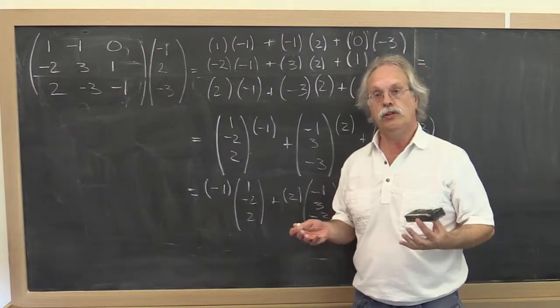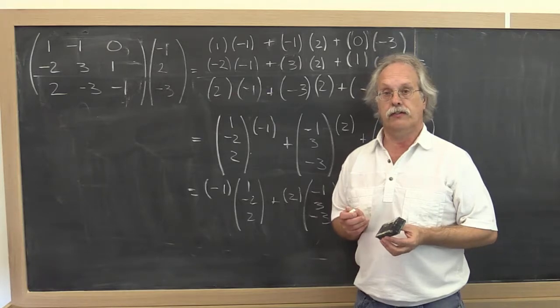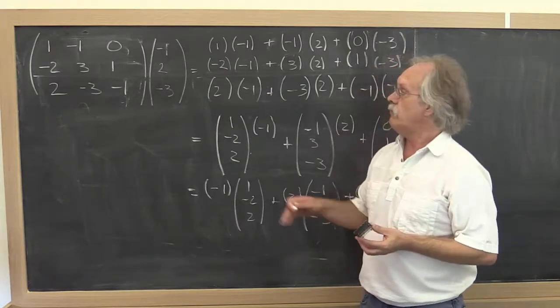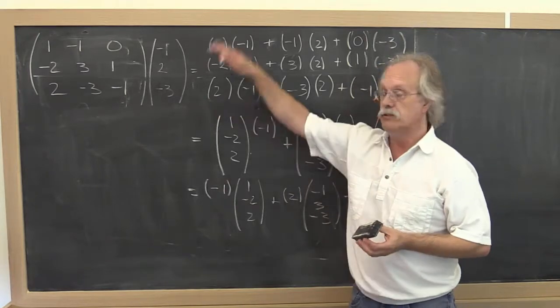Okay, so in the last unit you derived two algorithms for doing matrix vector multiply. One that went through the matrix from top to bottom and one that went through the matrix from bottom to top.